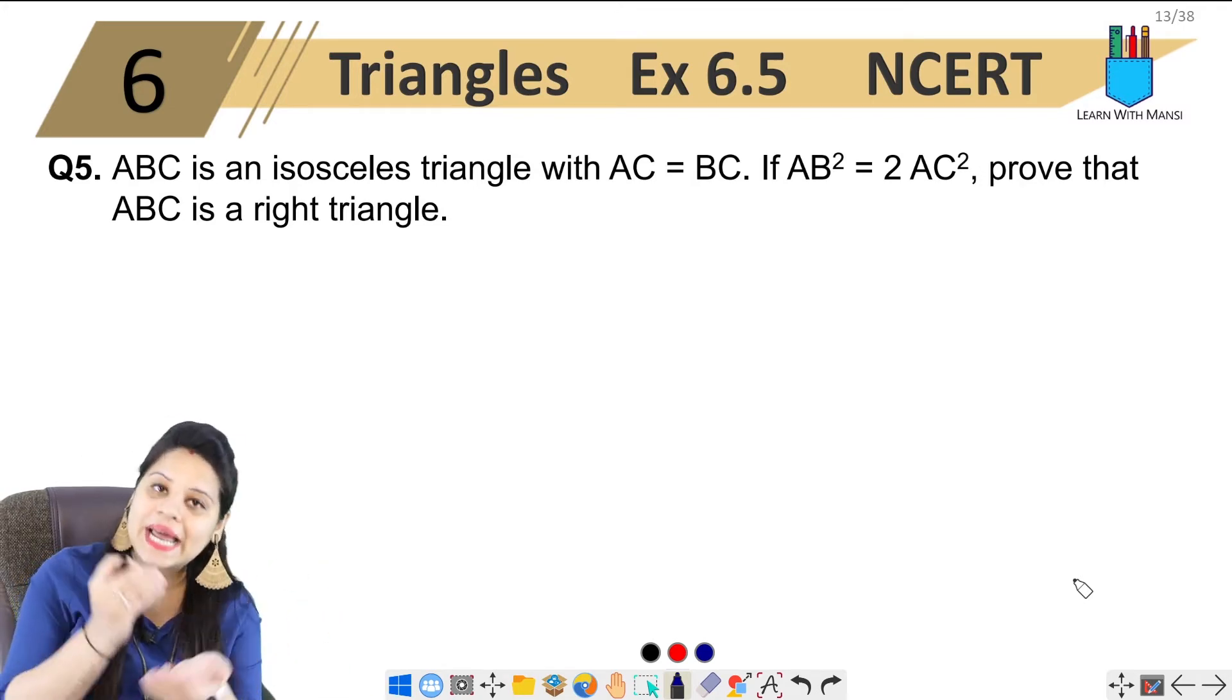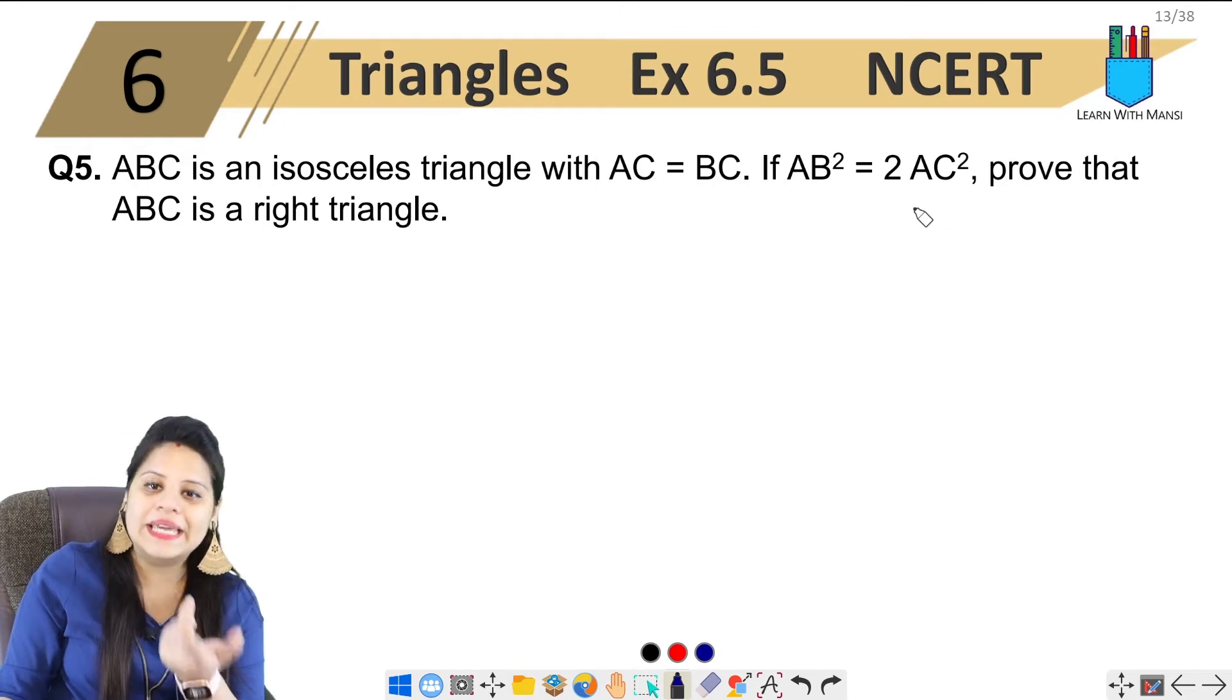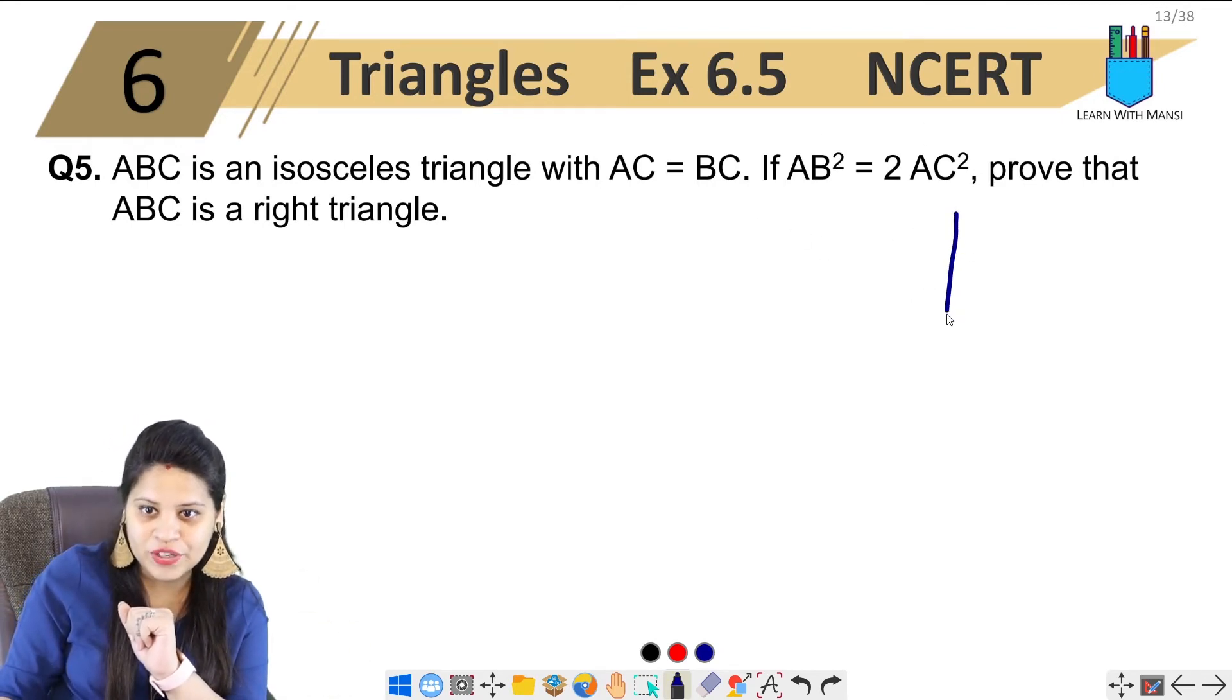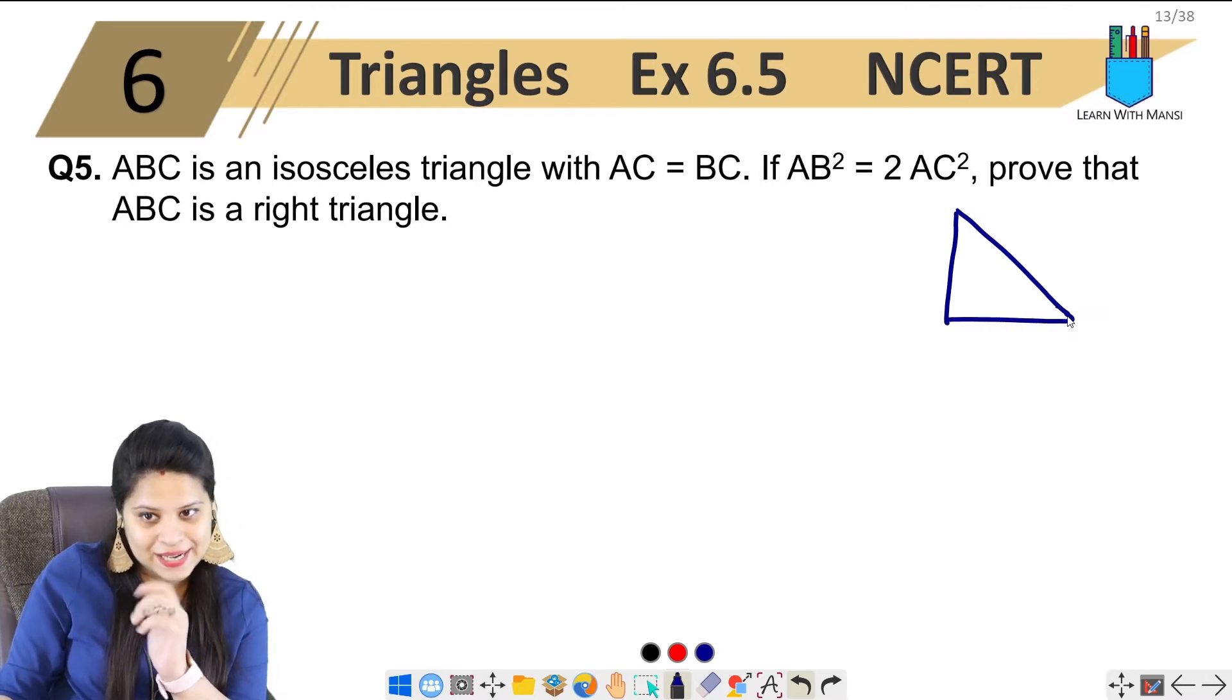So we have to prove that it is a right triangle and isosceles triangle. Let's prove this. We have to make a figure, because we have to prove it is a right triangle, so we will make it like this.